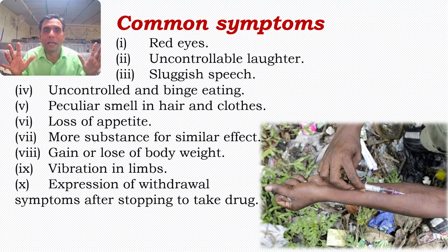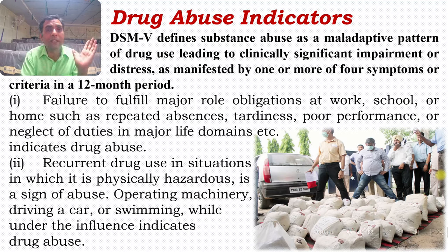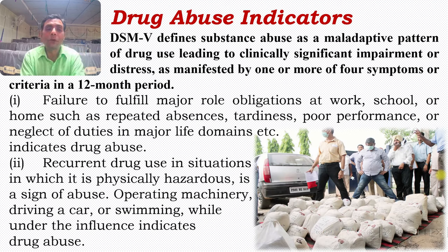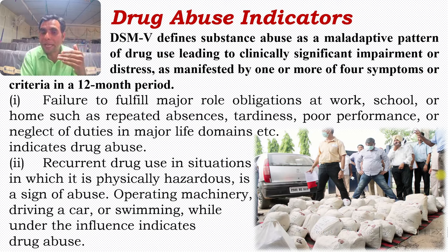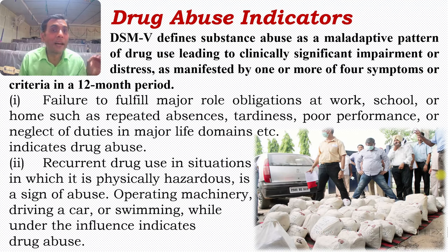The DSM-5 — Diagnostic and Statistical Manual 5, published by the APA — defines substance abuse as a maladaptive pattern of drug use leading to clinically significant impairment or distress, manifested by one or more of four symptoms within a 12-month period. If an individual manifests one or more of these four symptoms for at least 12 months, we can safely categorize that individual as a drug addict.